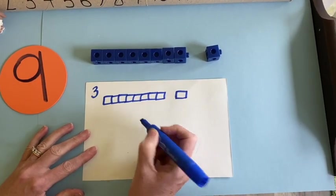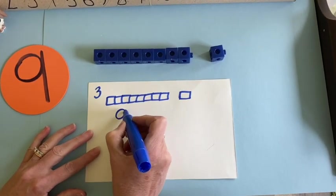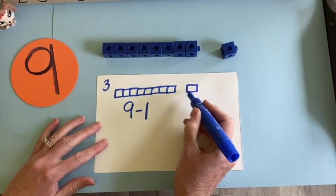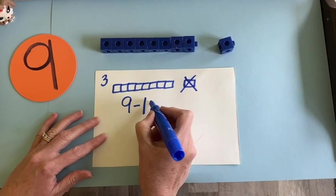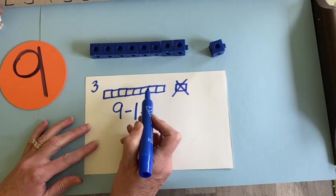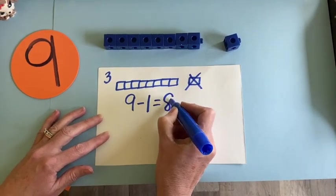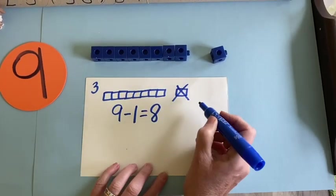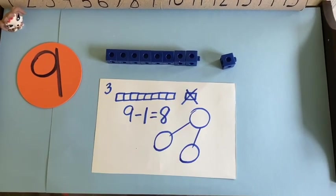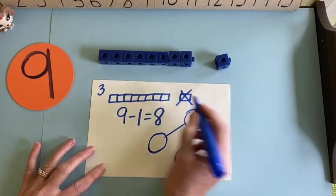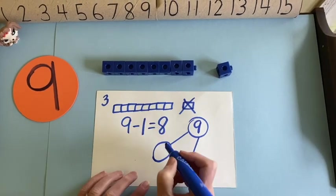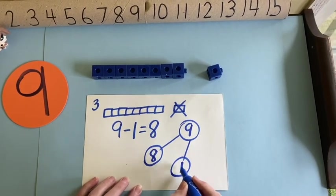So my number sentence would be how much all together? Nine. Take away one. On paper, we pulled it away from the group and I'm going to cross it off. Equals, how many are left? Count them. One, two, three, four, five, six, seven, eight. Eight. Okay, let's make that number bond. A circle, our nine would go here because it's the whole. We had nine all together. And I have a one, which could go in either circle. And an eight that are my parts. Eight plus one equals nine.